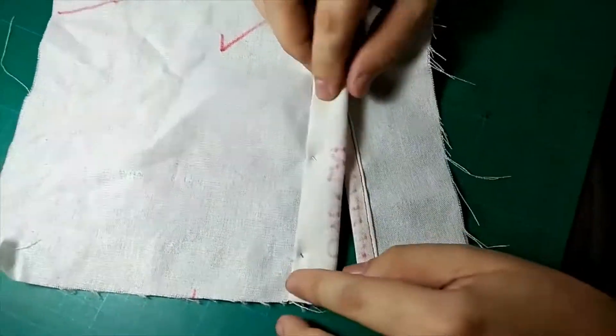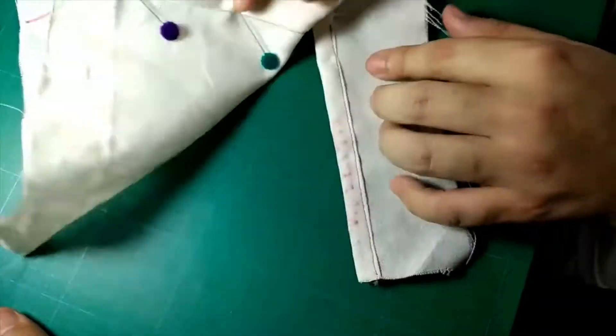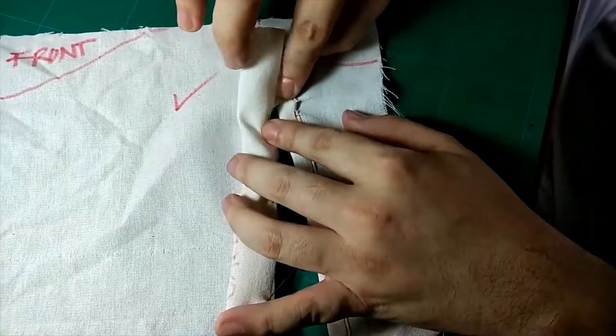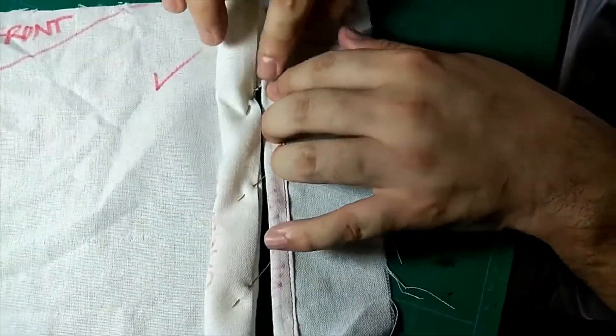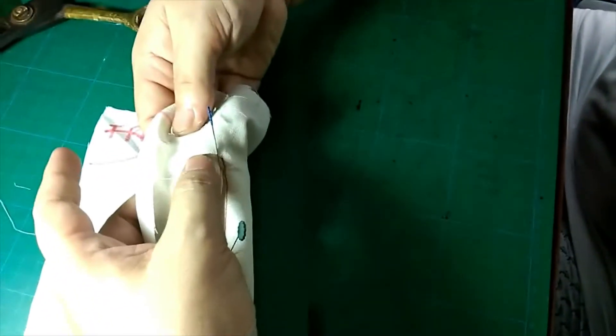Now after sewing the underlap, we're going to sew the overlap. The position of the triangle should be inside here and then the underlap should be over the triangle. So when you turn it around, it should have a clean finish.